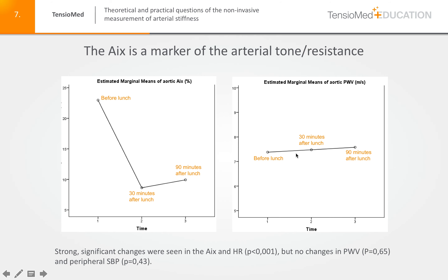What happened with pulse wave velocity? No changes were seen. Before lunch, 30 minutes after lunch, and 90 minutes after lunch, the pulse wave velocity remained practically the same. So while the changes in the augmentation index were very significant, no changes were seen in the aortic pulse wave velocity.